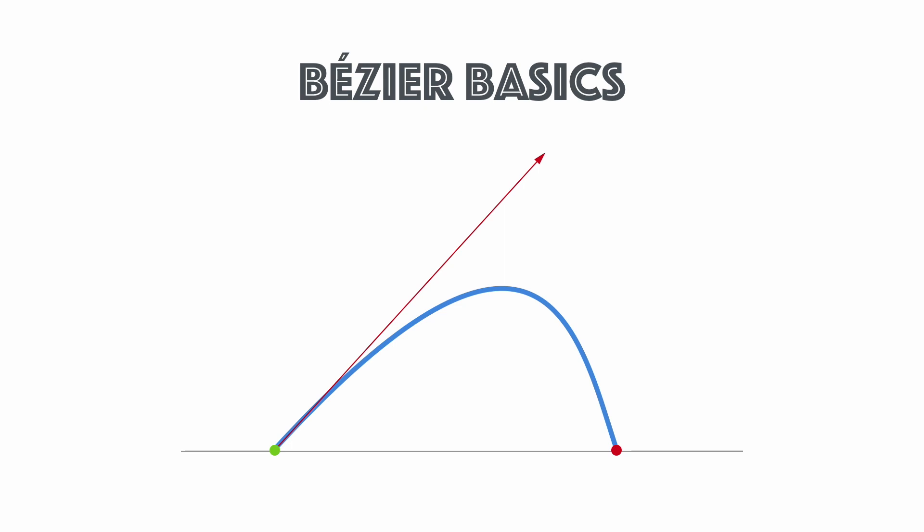Imagine you're standing at the green point and throwing an object into the air, at an angle represented by a red arrow, with force represented by the length of that arrow. If you know those things — your starting point and the vector for how you're throwing — you can plot the course of the object. You also need a gravity vector, which is constant, and some air resistance, which is why the curve is not symmetrical.